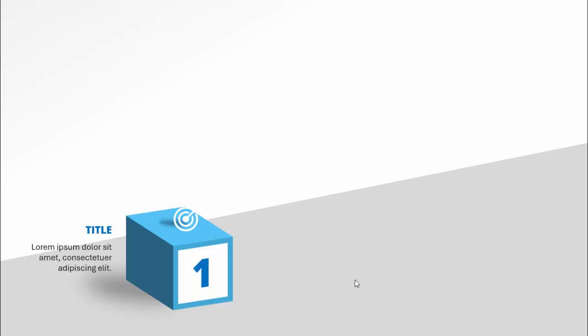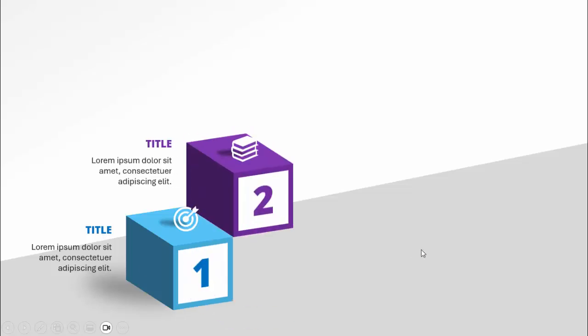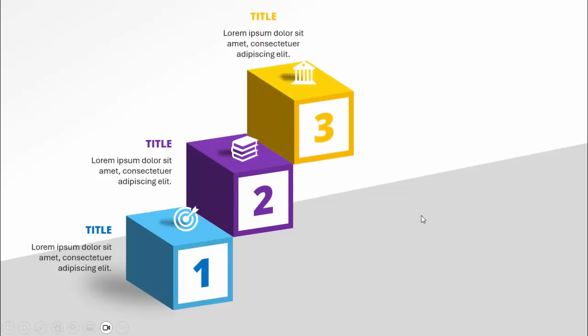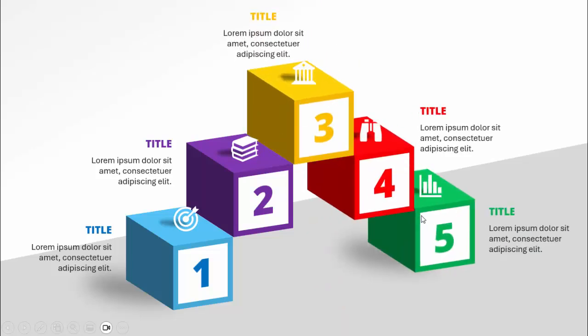In today's tutorial I'm going to show you how to create a five-options infographic slide in PowerPoint. When I click, it will show the first box where I've added the option number, icon, title and detail text. When I click again it will come with a different color box — option two, option three, option four and option five.